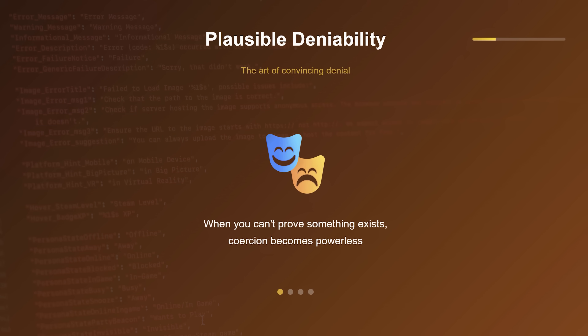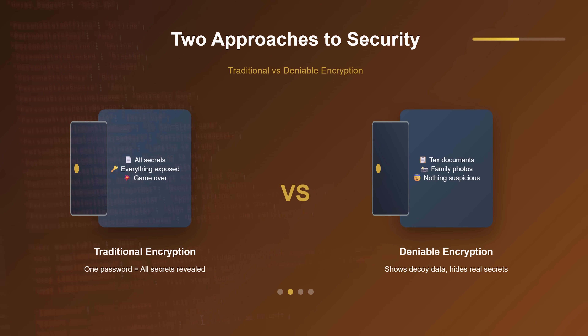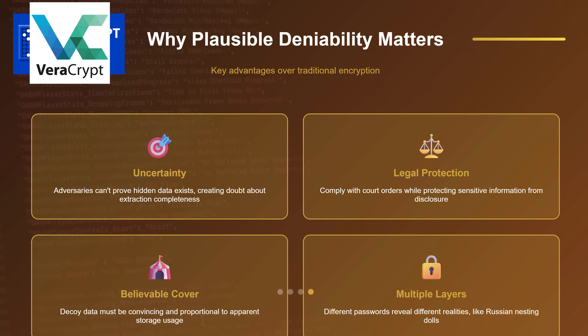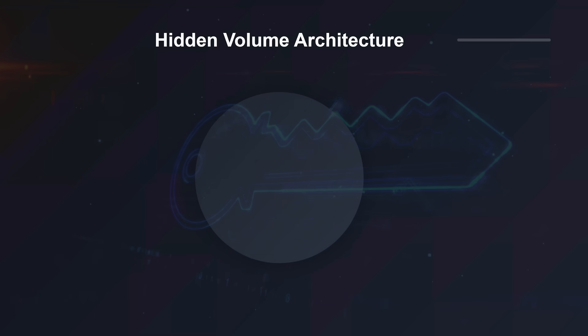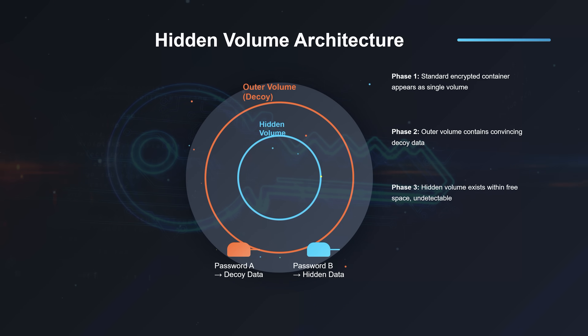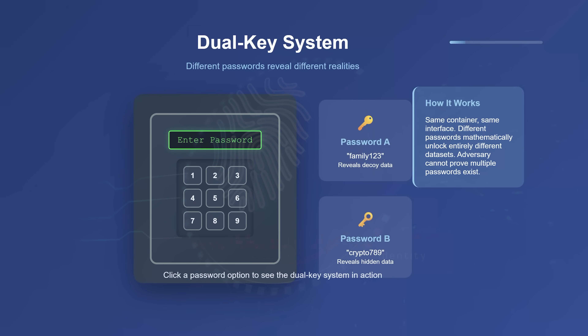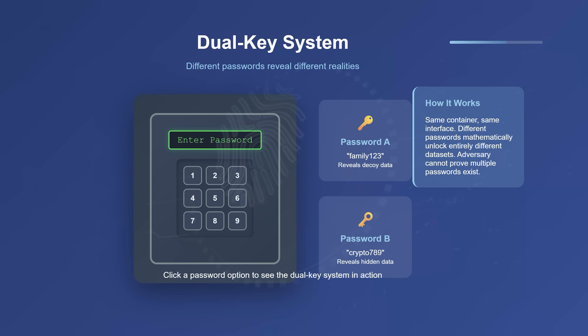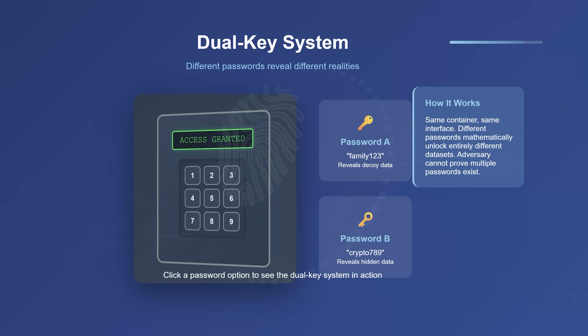If someone forces you to unlock your encrypted files, you reveal only the decoy volume and convincingly deny that anything else exists. The model was later implemented in tools like TrueCrypt and its successor VeraCrypt, which introduced the hidden volume feature. The user creates an encrypted container within another encrypted container, each with different passphrases. One password reveals your tax returns and cat photos — that's the decoy. Another reveals your XMR wallet, Bitcoin wallet keys, or whatever else you'd rather keep private. Crucially, the existence of the second volume remains completely undetectable. Even advanced forensics can't really distinguish between unused disk space and hidden data.